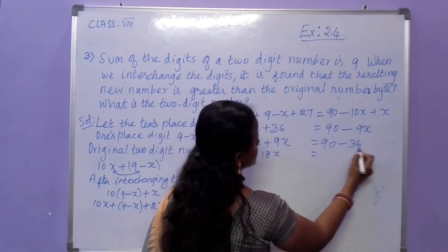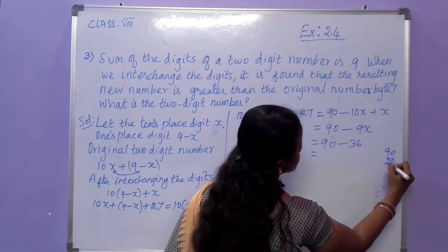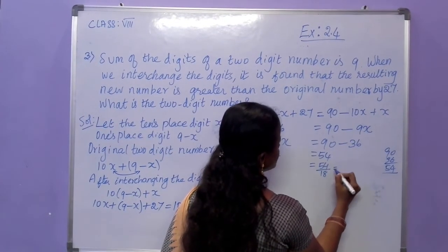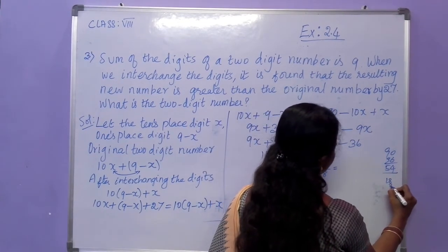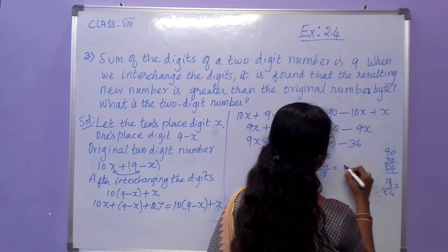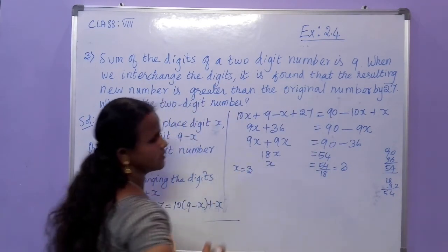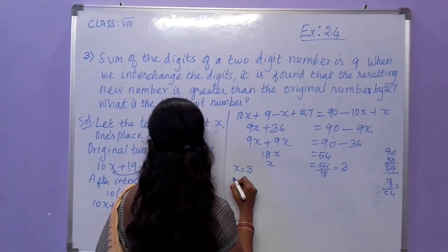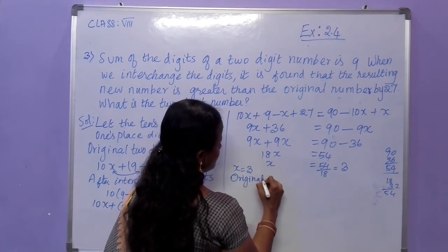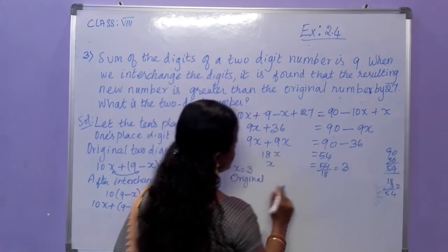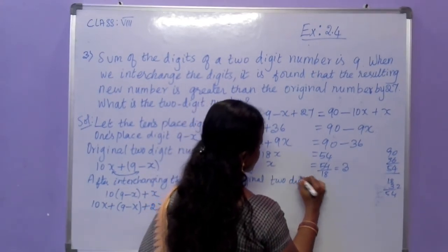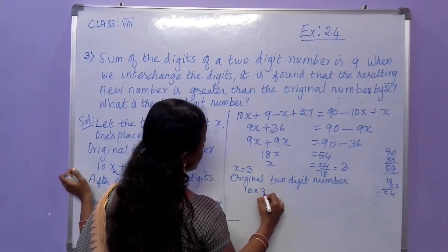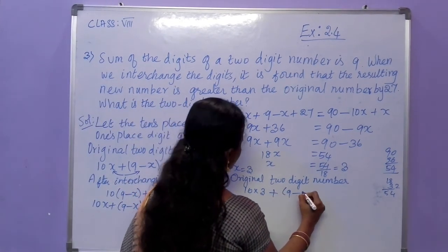So 18x equals 90 minus 36, which is 54. Therefore x equals 54 divided by 18, which gives x equals 3. Now substitute this x value into the original number: 10 multiplied by x is 10 multiplied by 3.